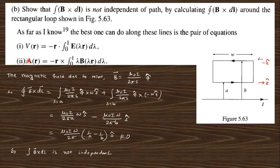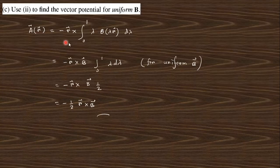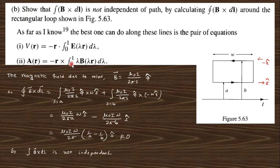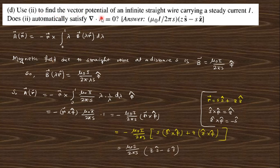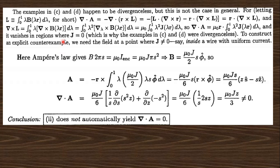Using formula number 2, you find the vector potential. The vector potential formula is written here. Since B is uniform, it is taken outside the integration; the integrand becomes lambda d-lambda, and the integration gives you one-half. This matches the expected result. Now use formula 2 to find the vector potential for an infinite straight wire carrying a steady current I. For a steady current, the magnetic vector potential is expressed in terms of s (the radial coordinate), so the vector potential gives this value. Taking B into the cross product — r is s times s-cap — cross product with z z-cap gives the final answer.